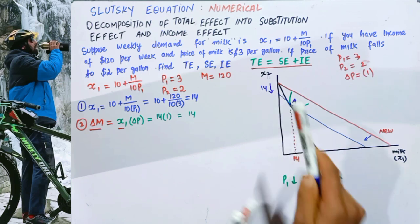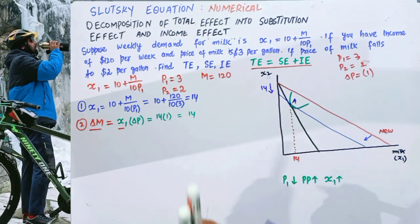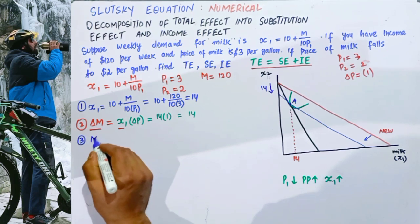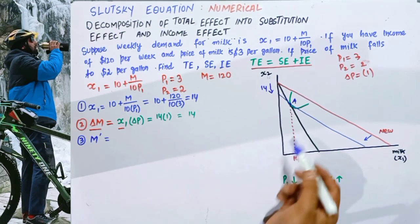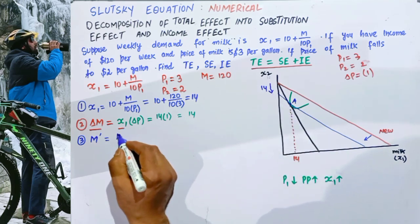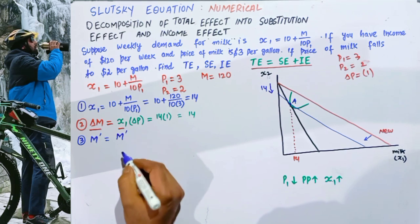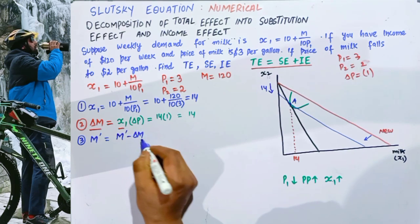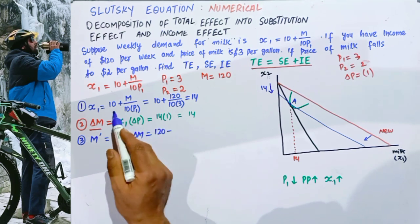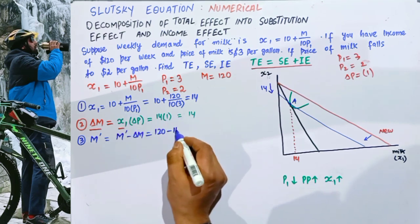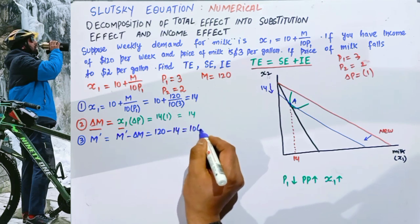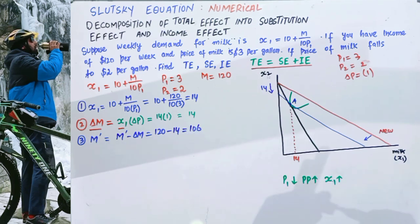The next step is to find the new income m'. The new income equals old income minus the change in income: m' = $120 − $14 = $106. So the new (compensated) income is $106.